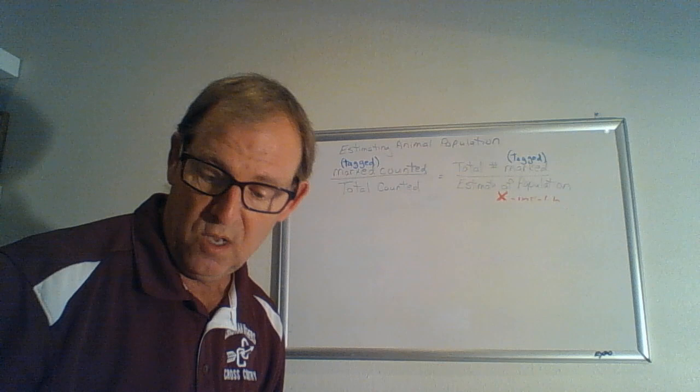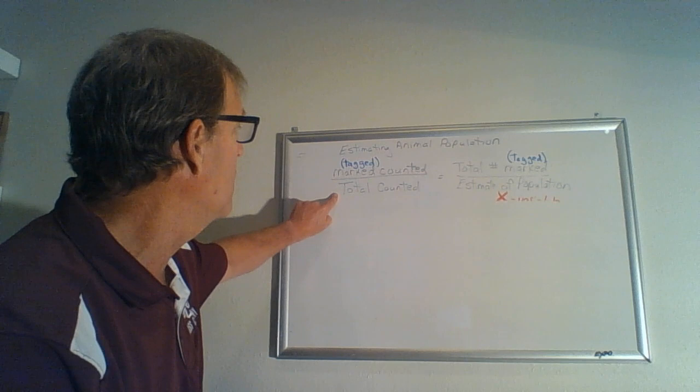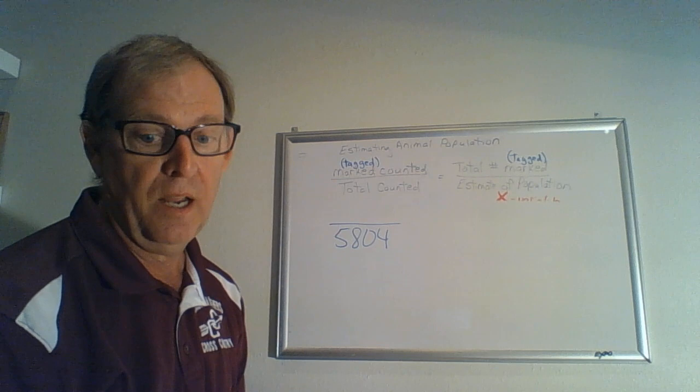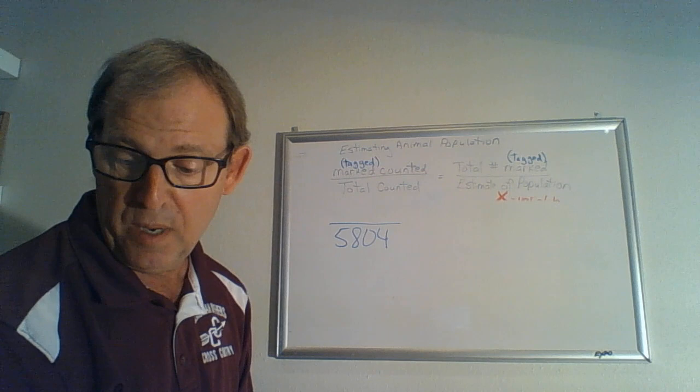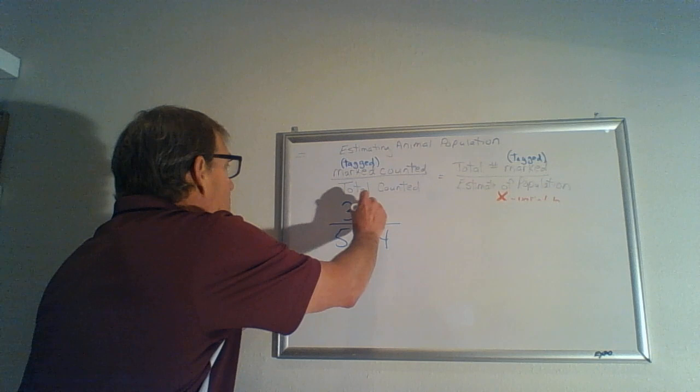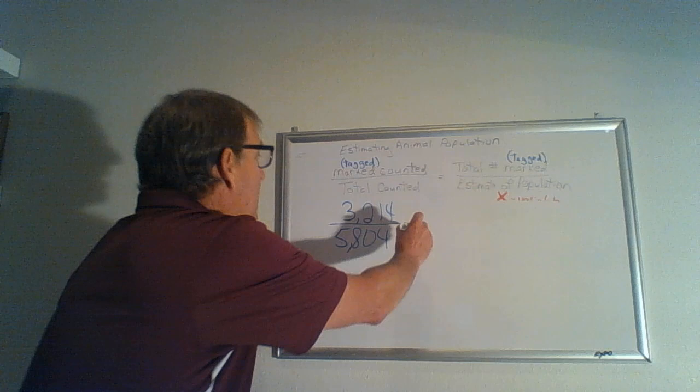So the example we're going to use is about rabbits. Let's look at this statement. Total rabbits counted is 5,804. So when I look up here, I look to see what was the total count. Well, that would be this denominator, so let's write that down: 5,804. And that's going to be our denominator. Now we said this number should be larger than this number. So let's do the next statement. Marked rabbits counted. So that's going to be the marked or tagged that are counted. And in this example, it's 3,214. And again, that number is smaller on top than the number as the denominator.